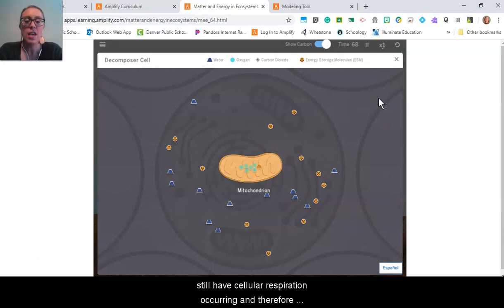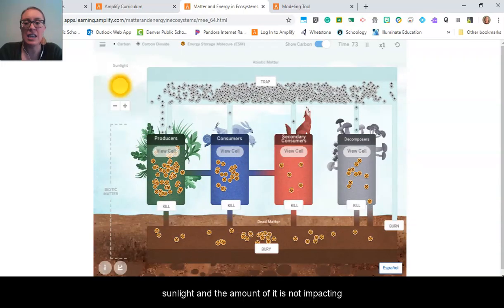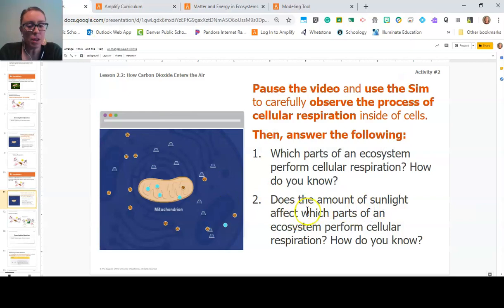And therefore sunlight and the amount of it is not impacting which parts of the ecosystem still perform cellular respiration.